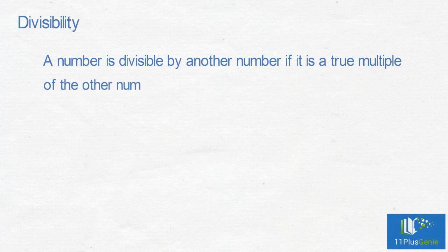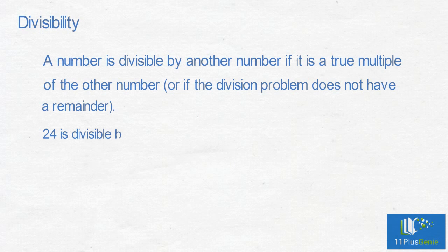A number is divisible by another number if it is a true multiple of the other number or if the division problem does not have a remainder. 24 is divisible by 3 because 24 divided by 3 equals 8 with no remainder.